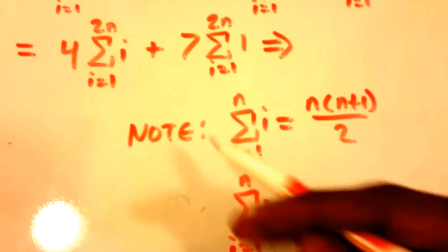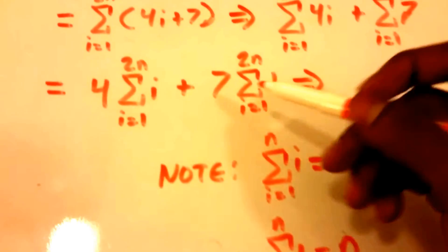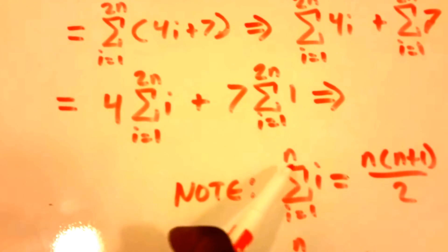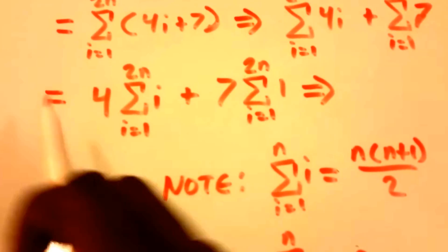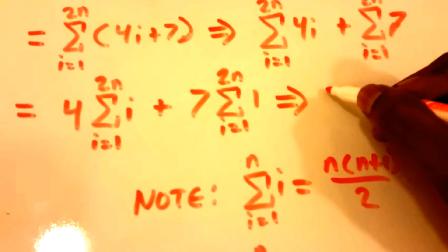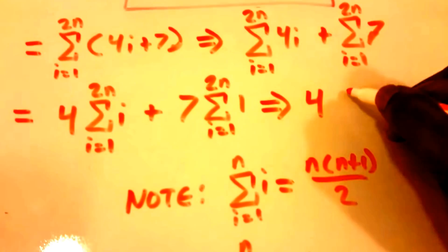So here we don't have an n, we have 2 times n. So this is going to become, we need our 4, so I'm going to say 4 times...